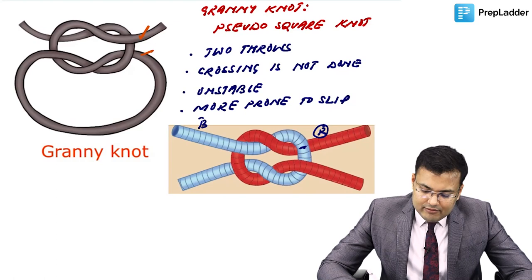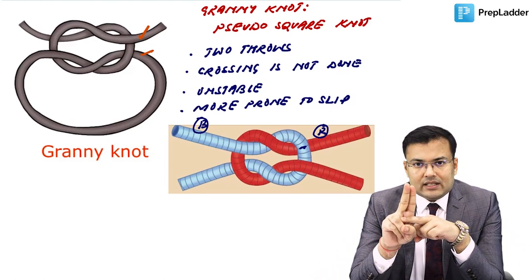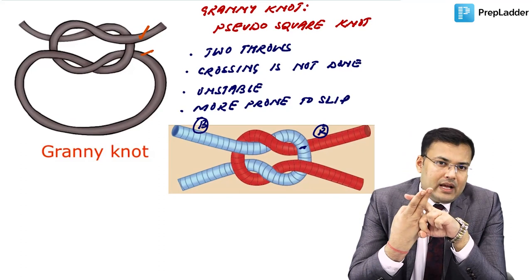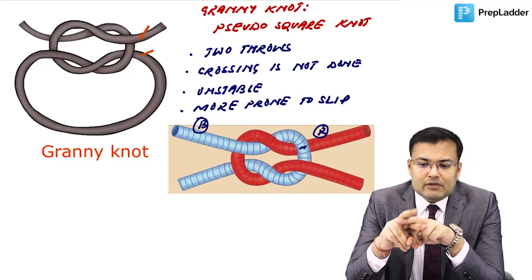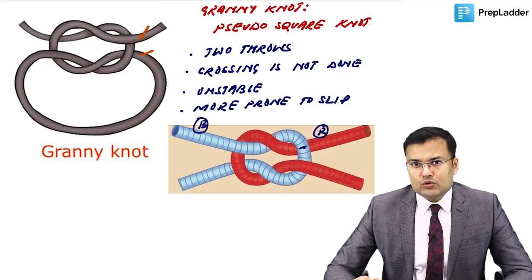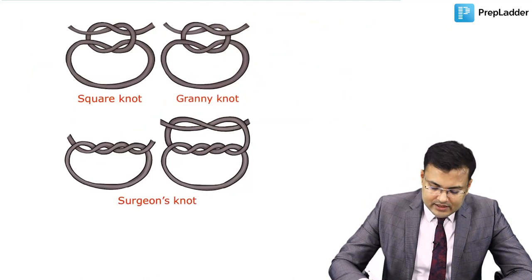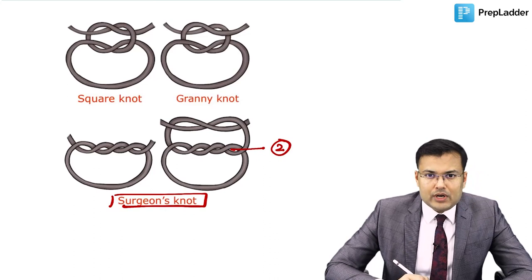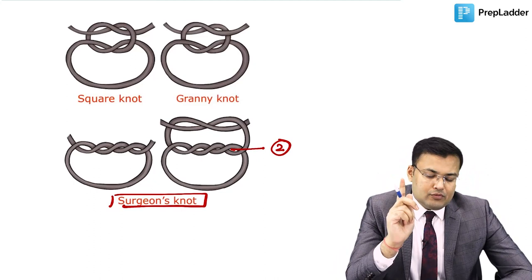Types of needles: round body needles or cutting needles. Cutting needles are further divided into conventional cutting and reverse cutting. If the cross-section is round, it is a round body needle; if triangular, it is a cutting needle. In conventional cutting, the apex points inward; in reverse cutting, the apex points outward.